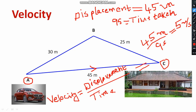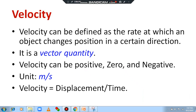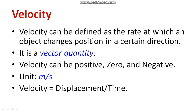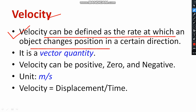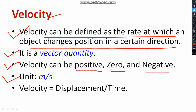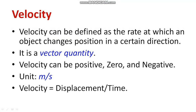Displacement has both magnitude and direction, therefore it is a vector quantity. Displacement can also be zero, negative, or positive. Velocity is defined as the rate at which an object changes its position in a certain direction. It is a vector quantity and can be positive, zero, or negative. The unit is meter per second — same as speed — but speed is a scalar quantity while velocity is a vector quantity. When talking about velocity, you consider displacement; when talking about speed, you consider distance.